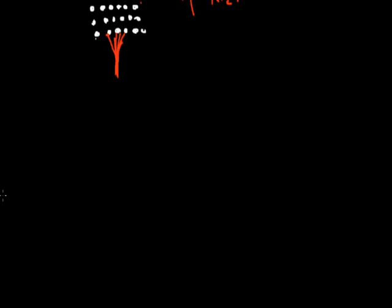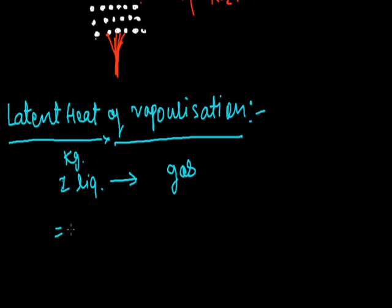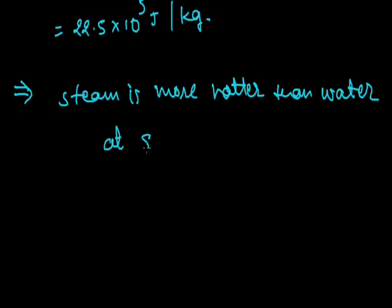Latent heat of vaporization: the amount of heat required to convert 1 kg of liquid into gas is known as latent heat of vaporization. The latent heat of vaporization of water is 22.5 × 10⁵ joule per kg. Steam, that is water vapor at 373 Kelvin, has more energy than water at the same temperature because it has absorbed extra energy in the form of latent heat of vaporization. So generally we say that steam is hotter than water at the same temperature.